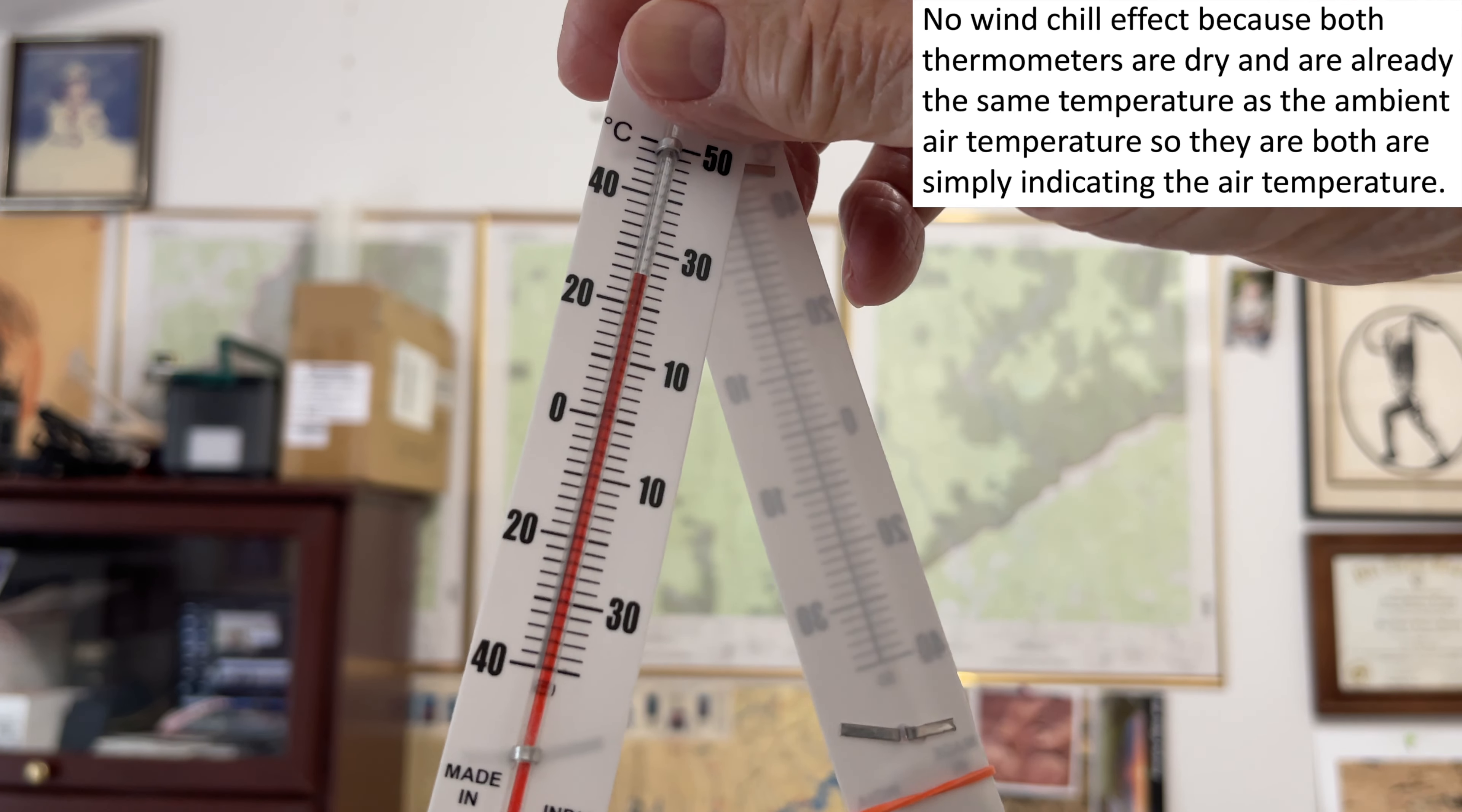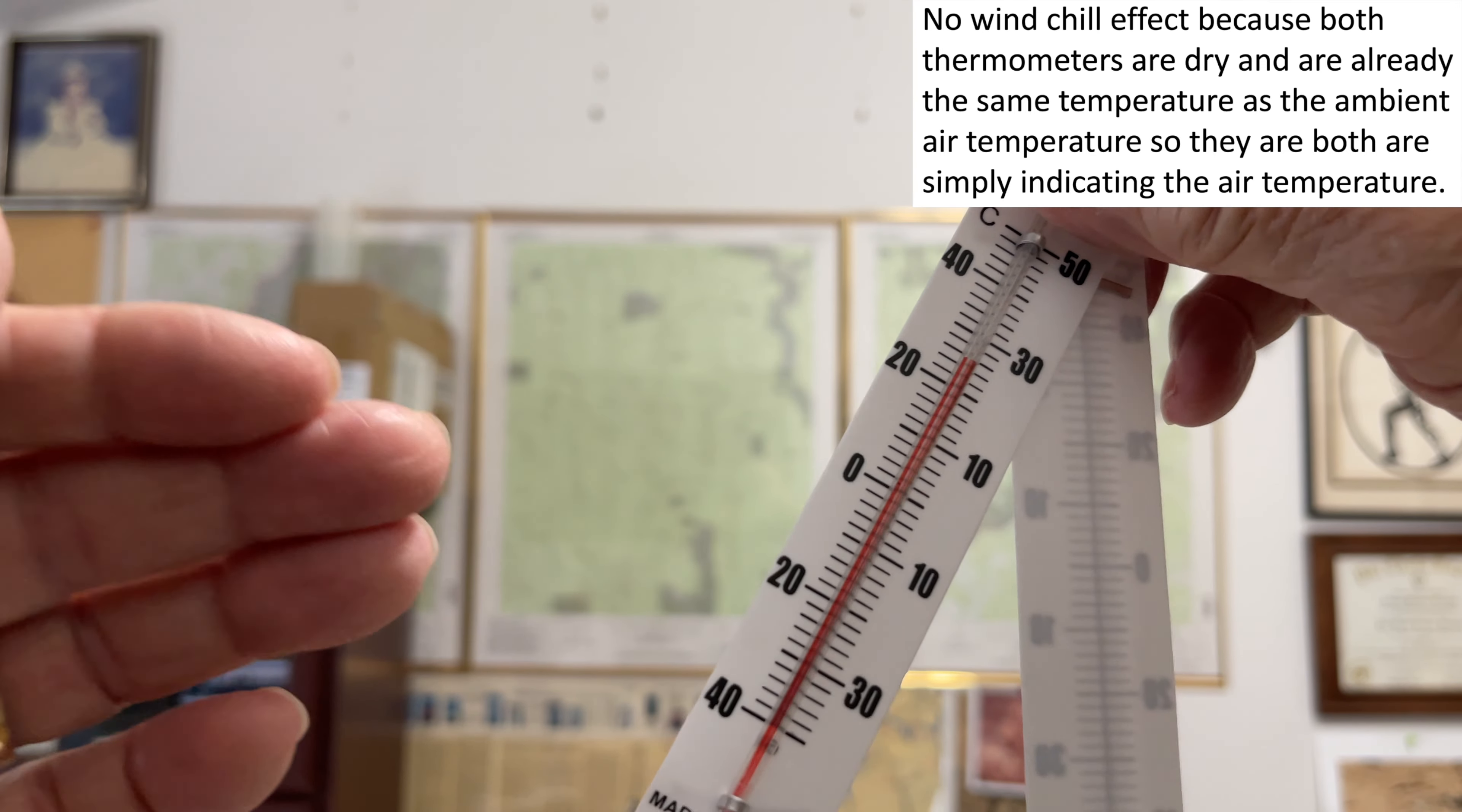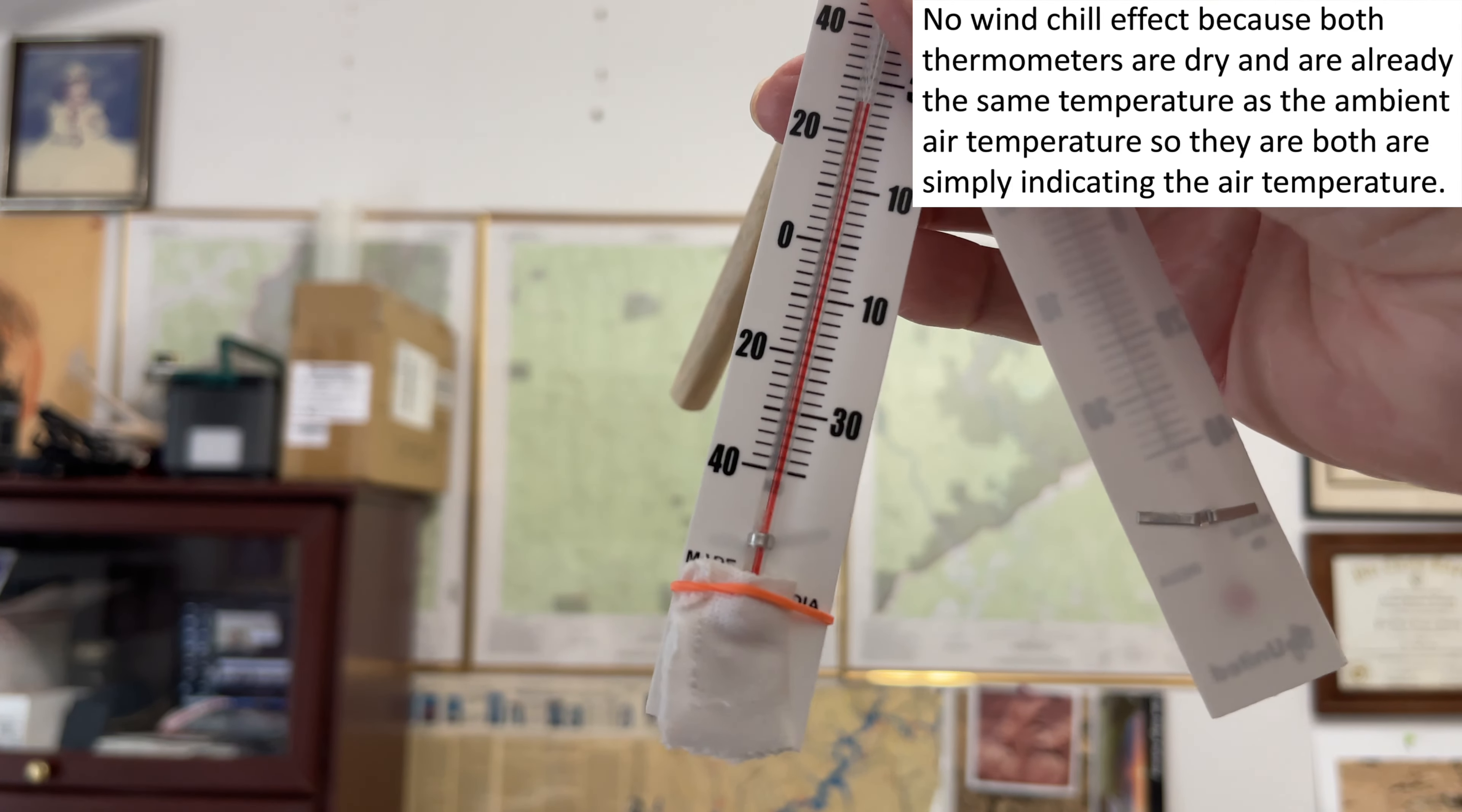It is also dry because there is no wick on it. It is 24 degrees Celsius, no difference. The reason is there is no wind chill effect because these things are not hot—they are the same temperature as the ambient air temperature. There is no evaporative cooling effect because I did not put water on that one. So, what we are going to do now is put some droplets of water on this wet one and repeat the experiment and see what we get.